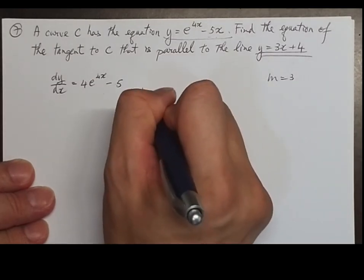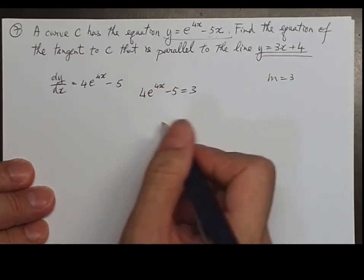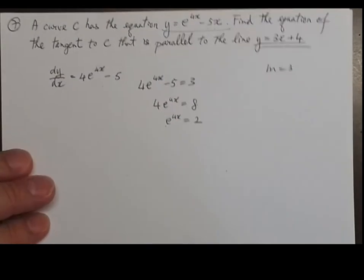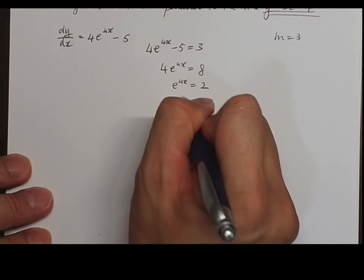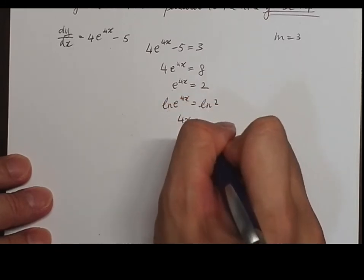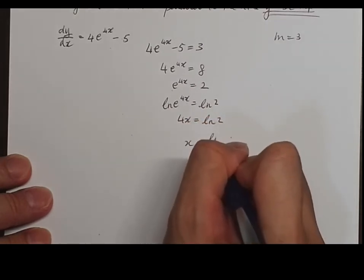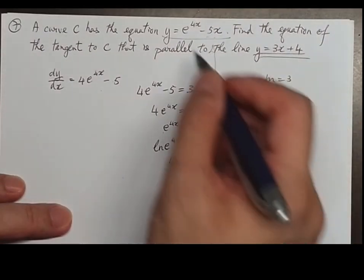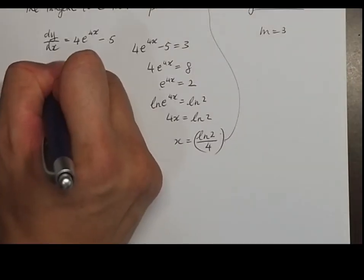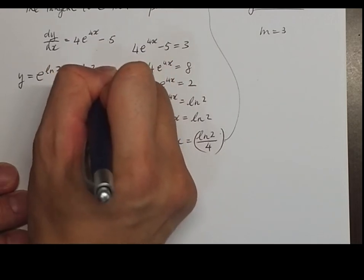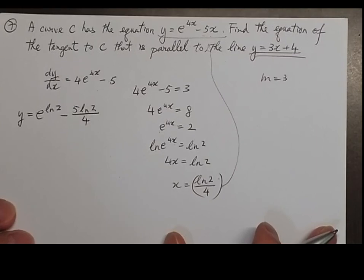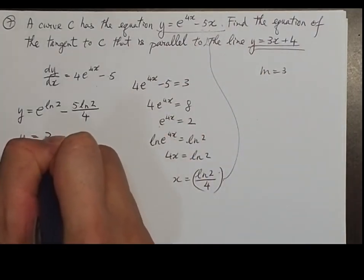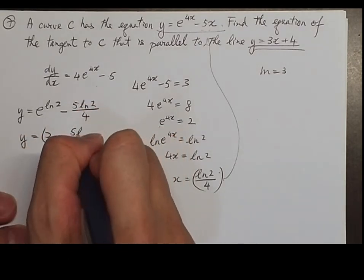Setting 4e to the 4x minus 5 equals 3, we get 4e to the 4x equals 8, so e to the 4x equals 2. Taking log on both sides: 4x equals log 2, so x equals log 2 over 4. Substituting back into the curve equation: y equals e to the log 2 minus 5·(log 2 over 4), giving y equals 2 minus 5·log 2 over 4.